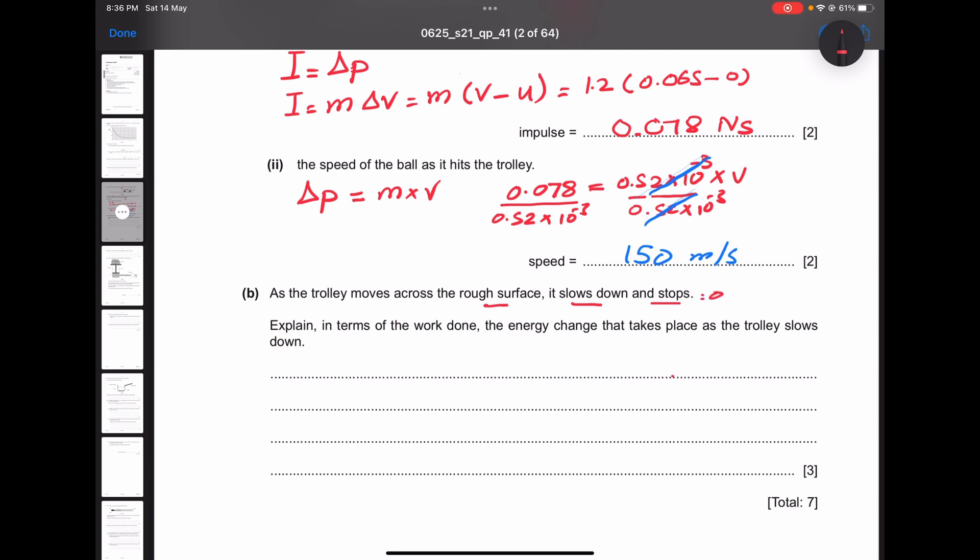In terms of work done, there is work done according to energy work theorem. So this work done happened against the friction force. So you have to say there is work done against friction, now you get one mark. The examiner is asking for three marks. The energy changed, so the kinetic energy is gonna be zero.